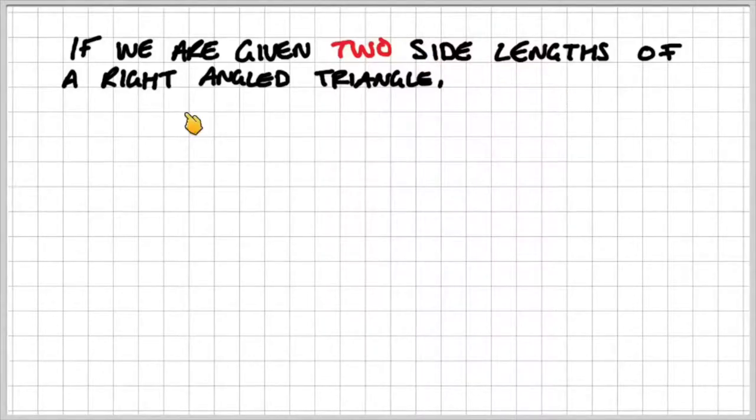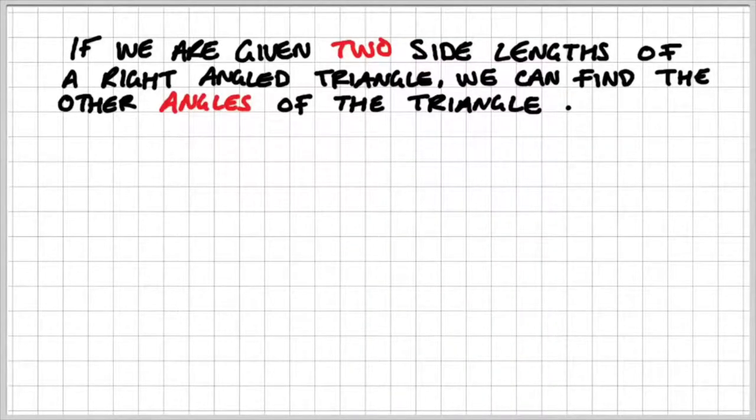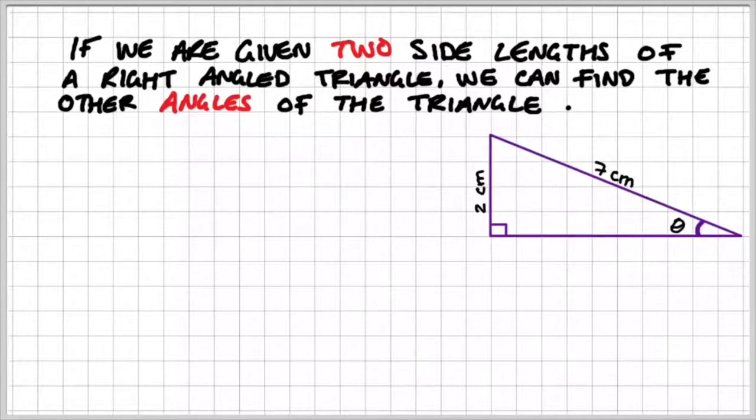So if we're given two side lengths of a right angle triangle, we can find the other angles of the triangle. So let's say we have a right angle triangle, and we have the side lengths of 2 centimeters and 7 centimeters, and we have the angle theta. We can label this as the hypotenuse, the length opposite angle theta, and the length adjacent to the angle theta.